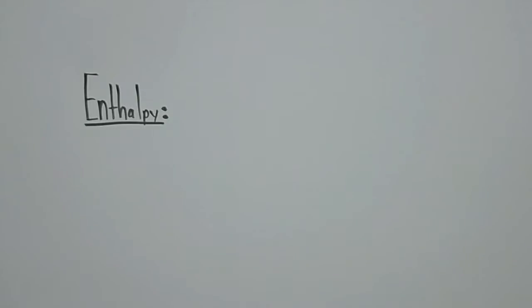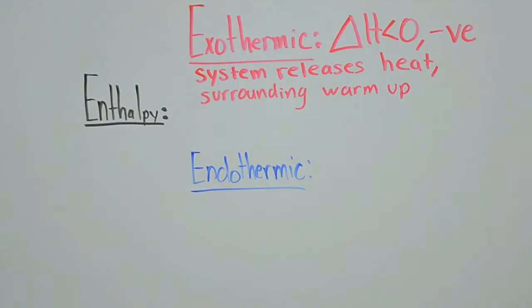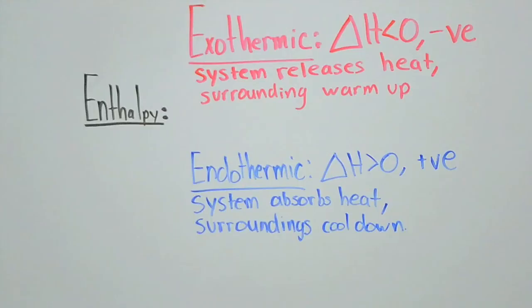Reactions with enthalpies having negative values are exothermic, meaning heat is being released - exo, exit - while surroundings warm up. While on the other hand, reactions with enthalpies having positive values are endothermic, meaning heat is being absorbed - endo, entering - while the surroundings cool off.